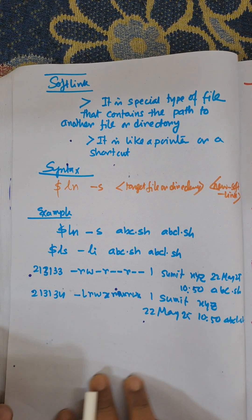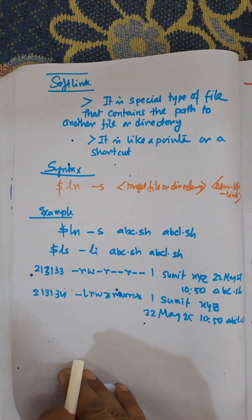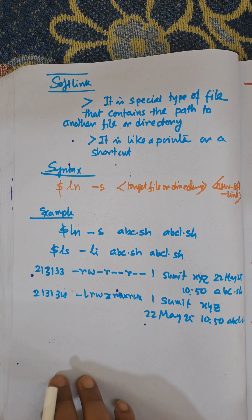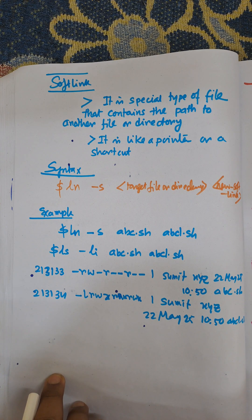Softlink and hardlink are the most important concepts in a Unix system. Thank you very much for watching this video. Please subscribe. Thank you.